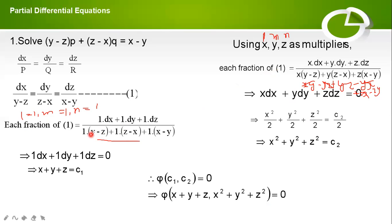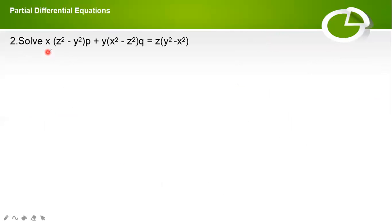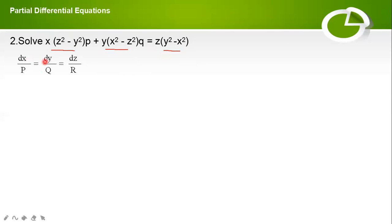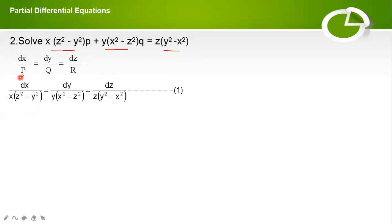Next problem: Solve x(z²−y²)p + y(x²−z²)q = z(y²−x²). Compare with P·p + Q·q = R: P = x(z²−y²), Q = y(x²−z²), R = z(y²−x²). Write the subsidiary equation dx/P = dy/Q = dz/R. Choose l, m, n such that l·P + m·Q + n·R = 0, then l·dx + m·dy + n·dz = 0 is the solution.